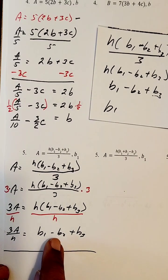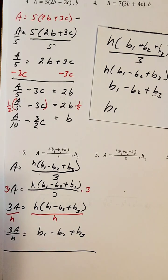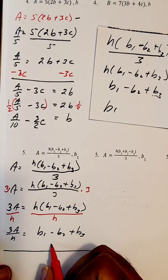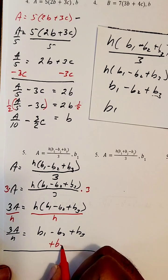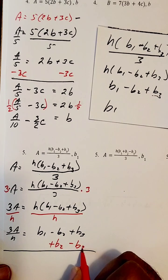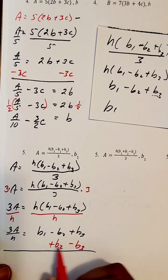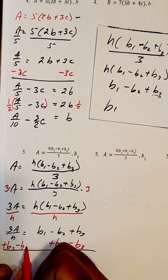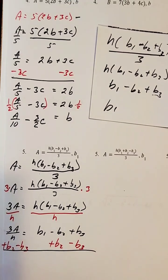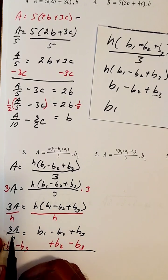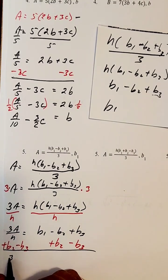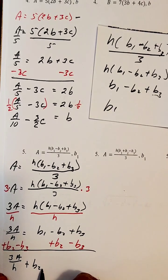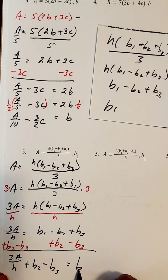Now we're going to get rid of B2 and B3 by using additive inverses: this is going to be a plus B2 and this is going to be a minus B3, so these will cancel. What you do to one side of the equation you also do to the other, so I'll also put a plus B2 and a minus B3 on the left side. What we'll get is: 3A divided by H, plus B2, minus B3, and this will give us B1.